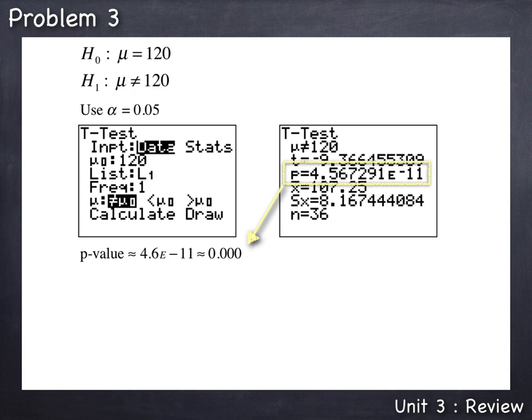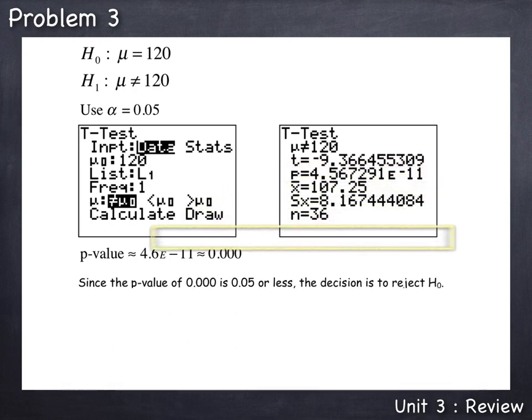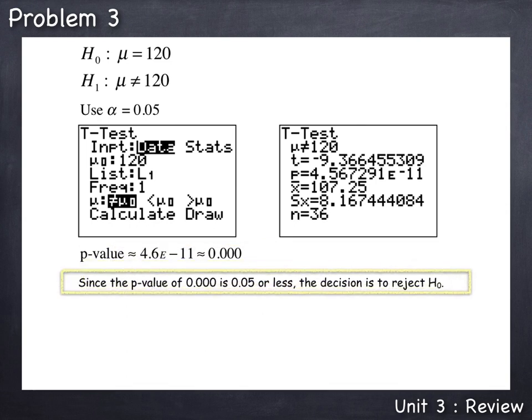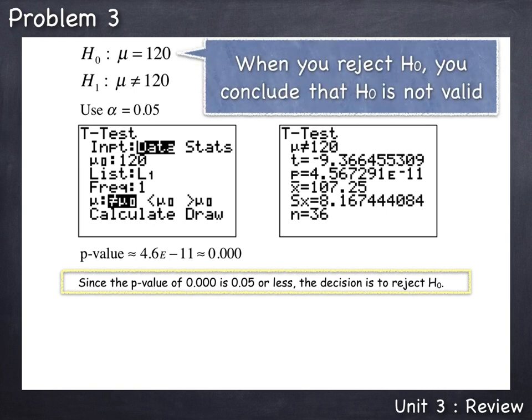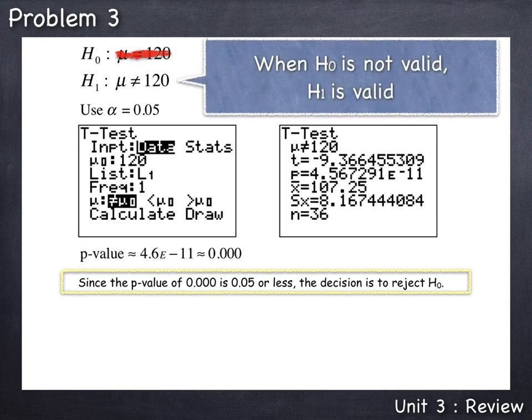Now that we have our p-value, we can make our decision. Since the p-value of 0.000 is 0.05 or less, the decision is to reject H0. And when you reject H0, you conclude that the idea in H0 is not valid. So here the H0 of μ equals 120 is not supported by the data, so we cannot conclude that the mean is 120. When H0 is not valid, H1 is valid. So in this case, there is sufficient data to support H1 which says that μ does not equal to 120. So now we're ready to answer the question.